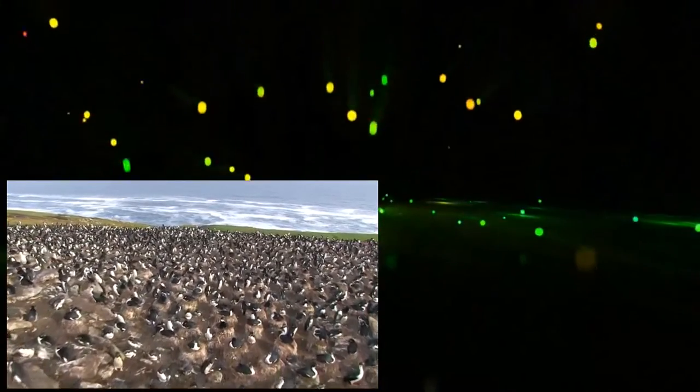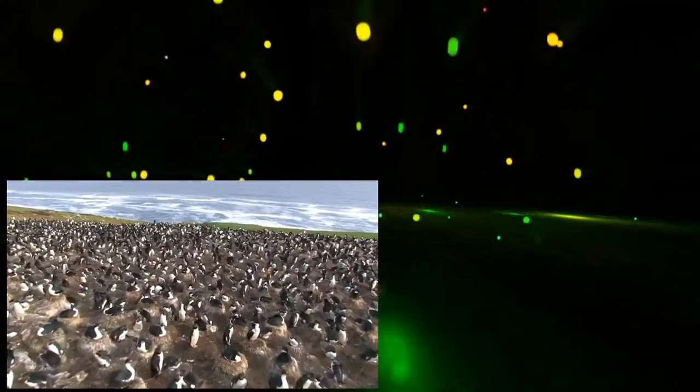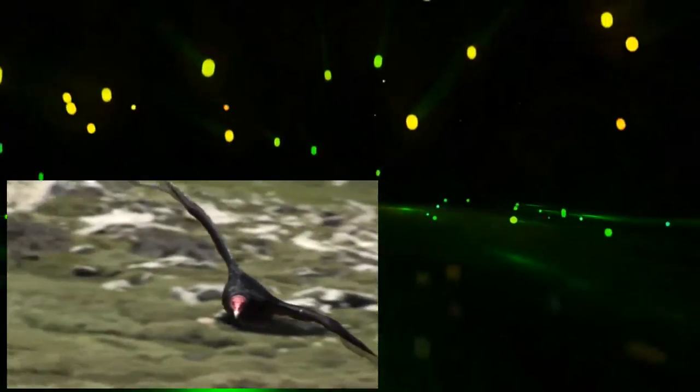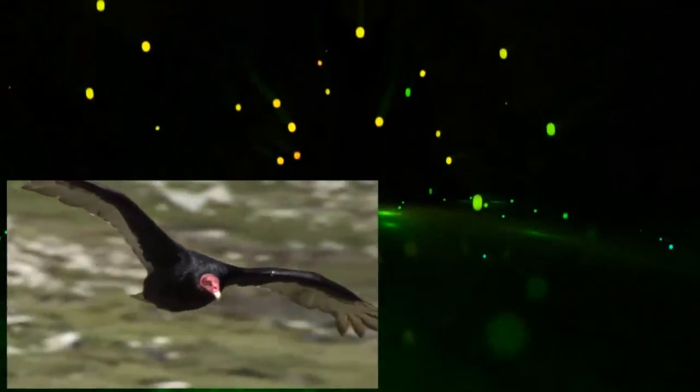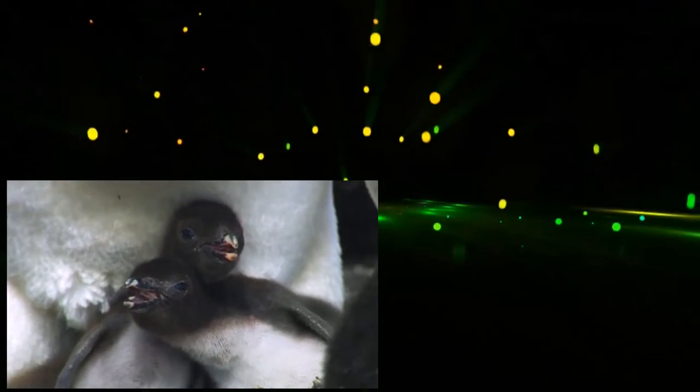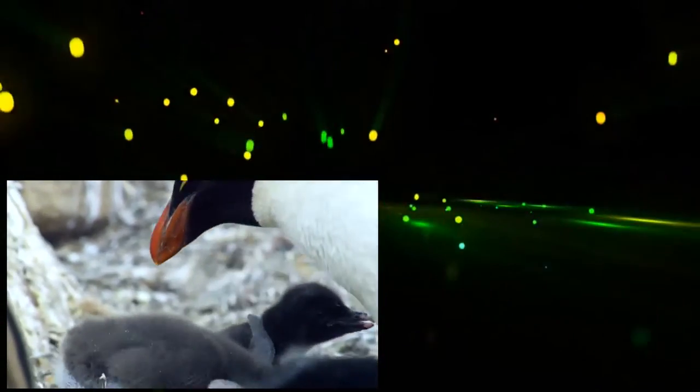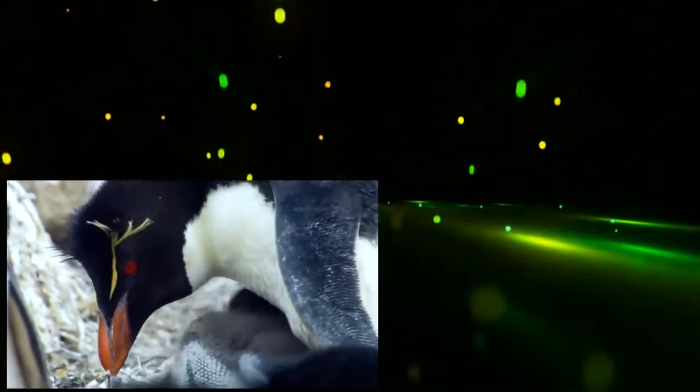At the rockhopper colony, the chicks face a more imminent danger. Turkey vultures. These scavengers are quite prepared to attack live chicks if they can. The penguins use their body as a shield, protecting their chicks.